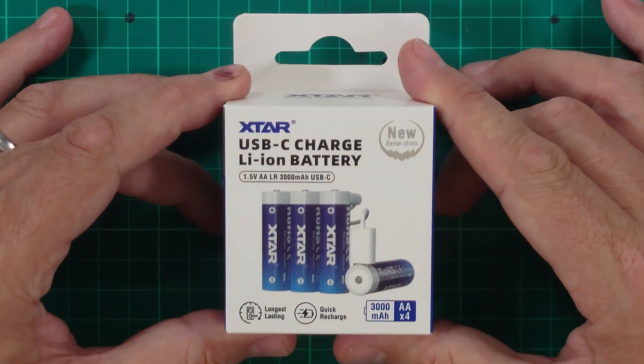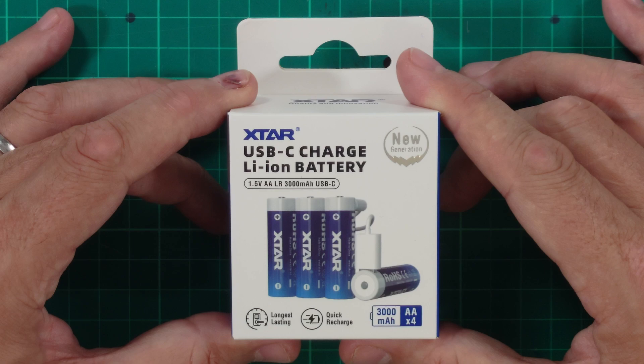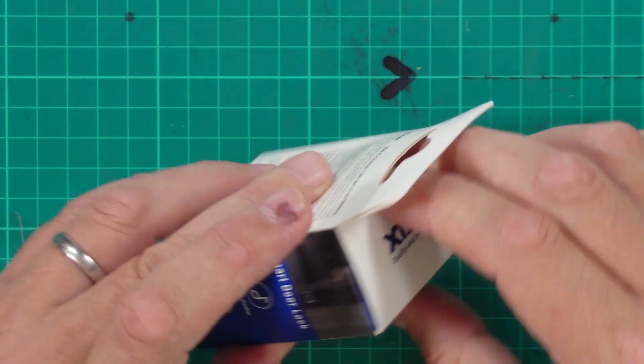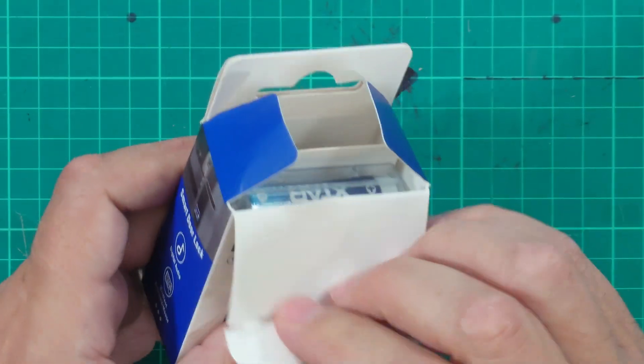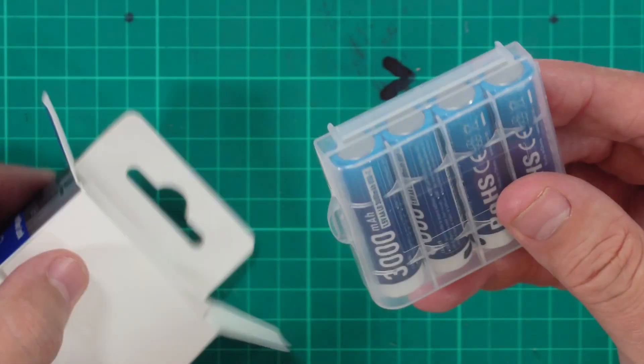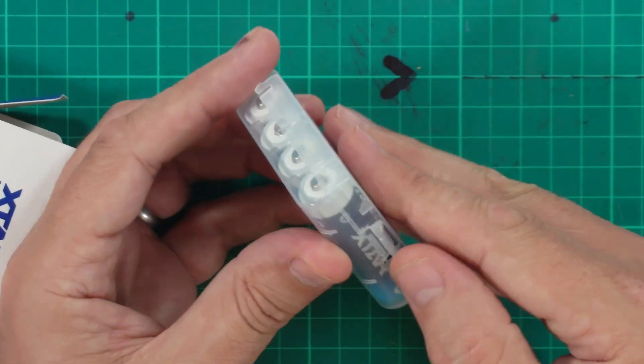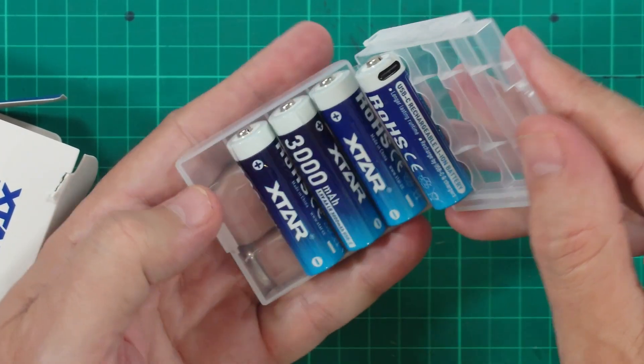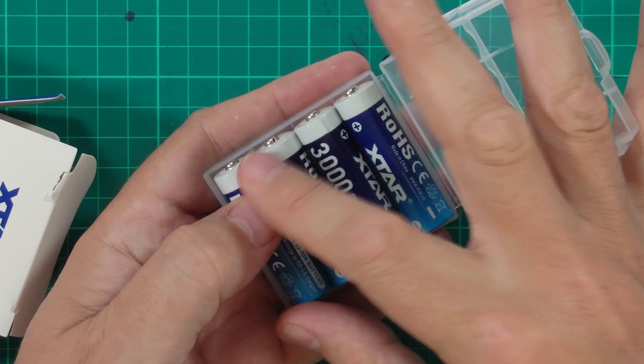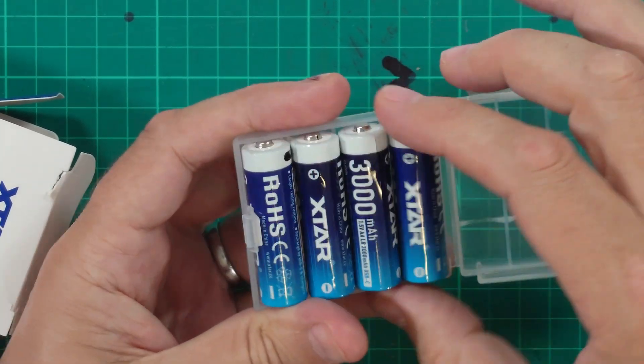So let's take a look at what you get in the X-Star box. Let's open it up. It's an unboxing video. Here we go. So we get four AA rechargeable batteries. Let's see if we can open this. Oh, that was pretty easy. It's quite a nice little carry case for them. There they are.